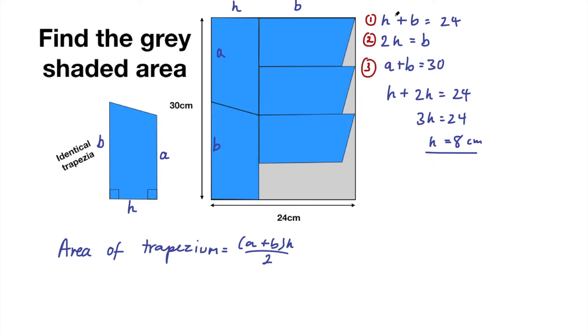Okay that's my first one. Well if h equals 8 centimeters then b is going to be 2 lots of 8 centimeters so b equals 16 centimeters and if a plus b equals 30 then a must equal 14 centimeters. Now I have a, b and h.